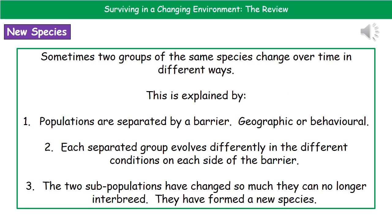There are certain occasions where two groups of the same species have changed over time in different ways. This was something Darwin observed while traveling around, and he managed to explain it in three simple steps. The first is that the population has been separated by a certain barrier — this could be a geographic barrier, such as being on different landmasses or different islands, or it could be a behavioral change, such as not coming into their fertile period at the same time.